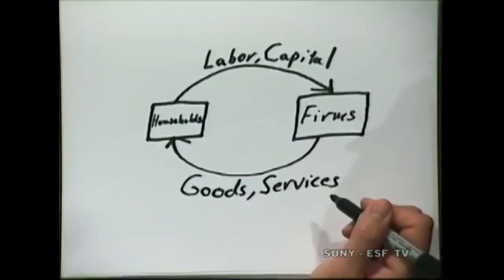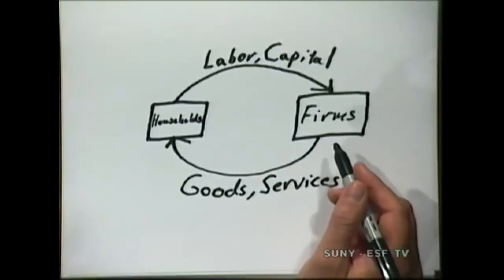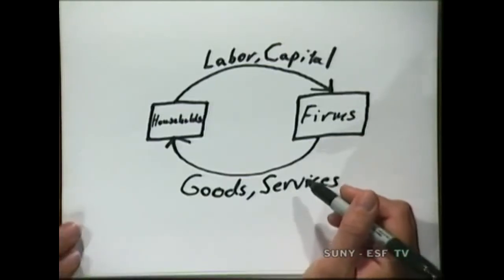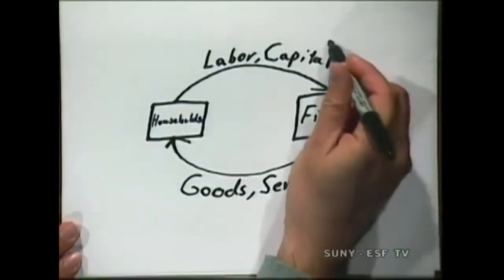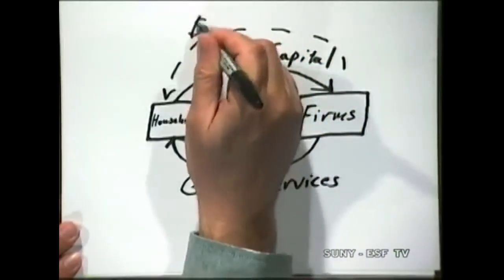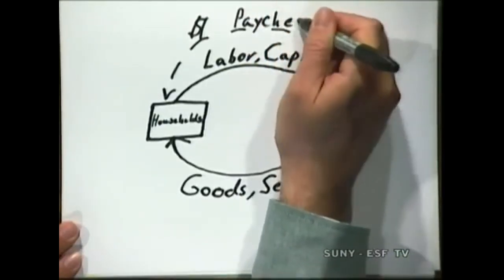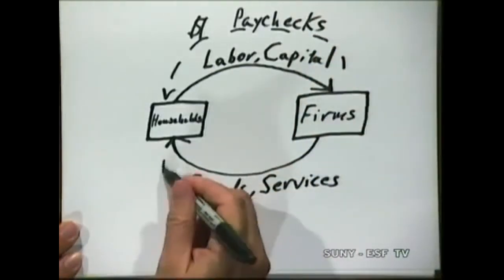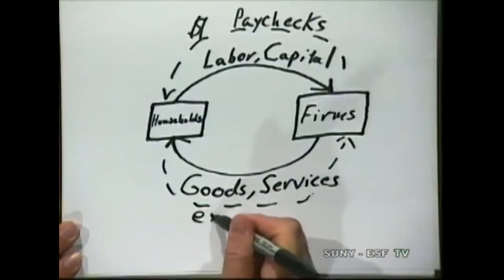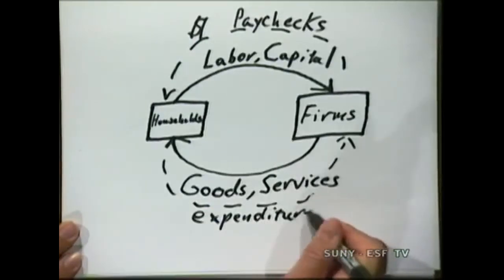The households, if you have a job, the firms could be where you work — the factories. You don't walk out with goods and services, hopefully. So something else has to happen. There's a transaction. We'll use a dash line, and that's money, and money goes the other way. So this could be things like your paychecks. And money goes the other way — this is your expenditures.